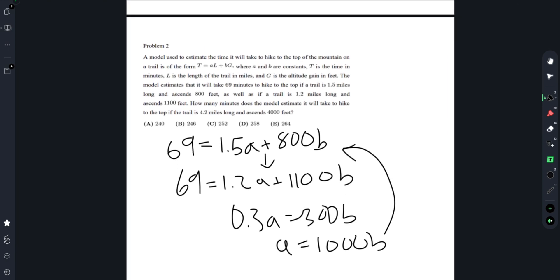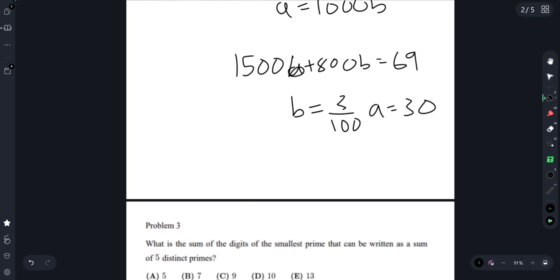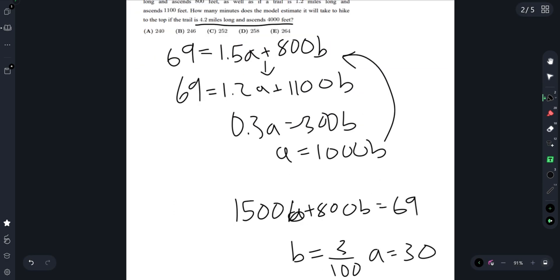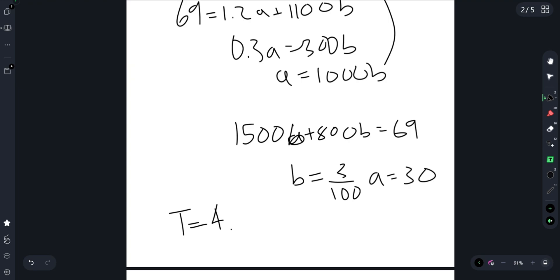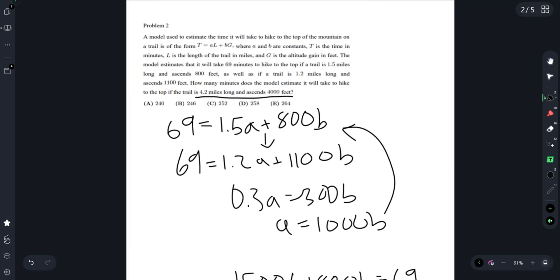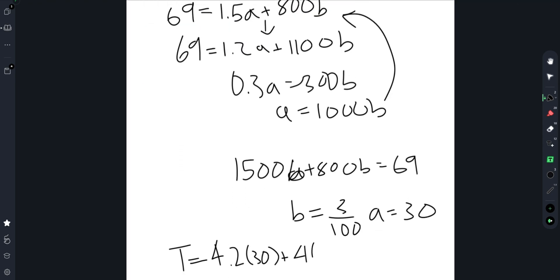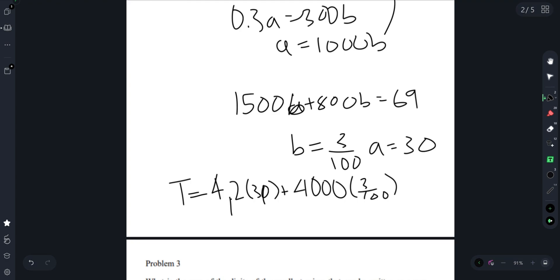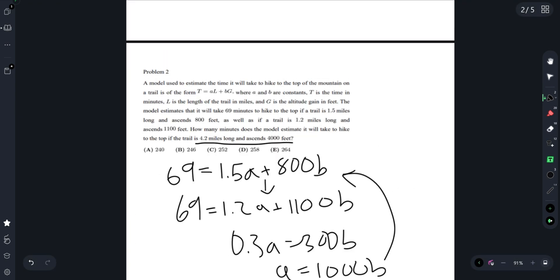Now plugging it in: T equals 4.2 times 30 plus 4000 times 3 over 100. Doing some quick math, we get this is 4 times 30 which is 126, and this is 120. Adding these up, we get 246, which is answer B.